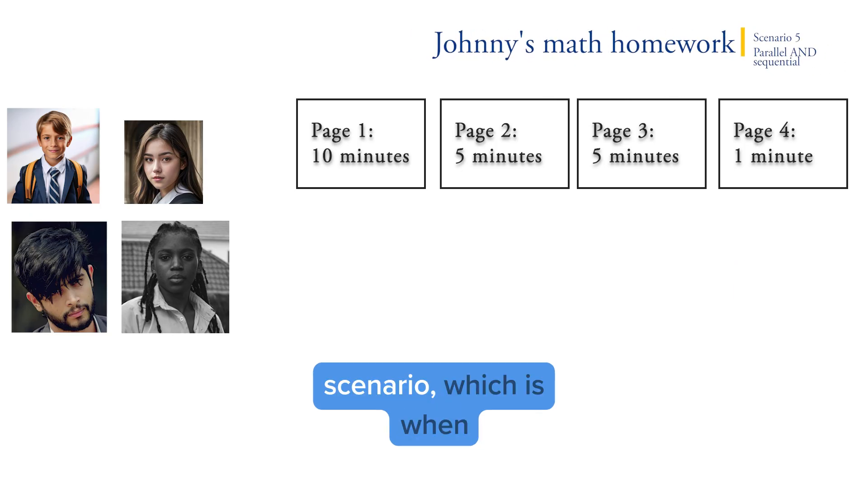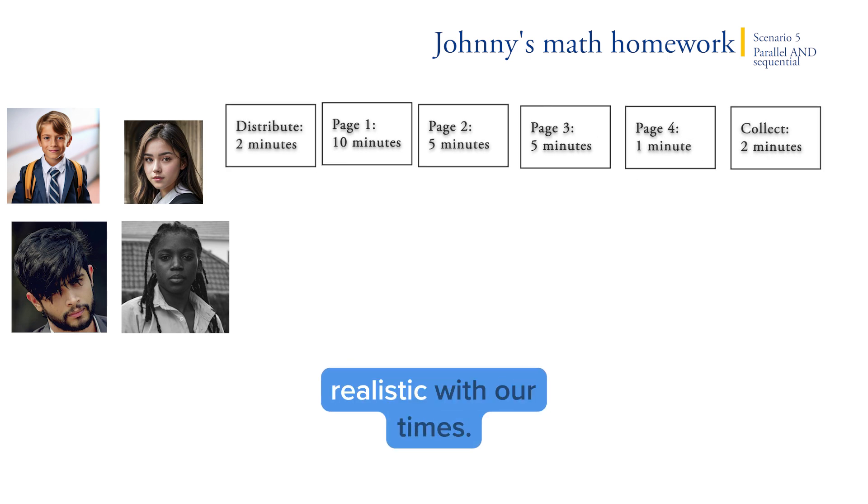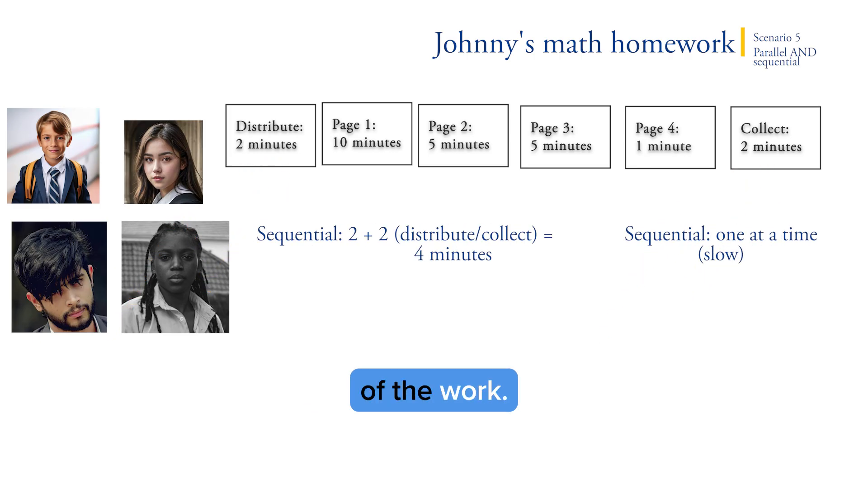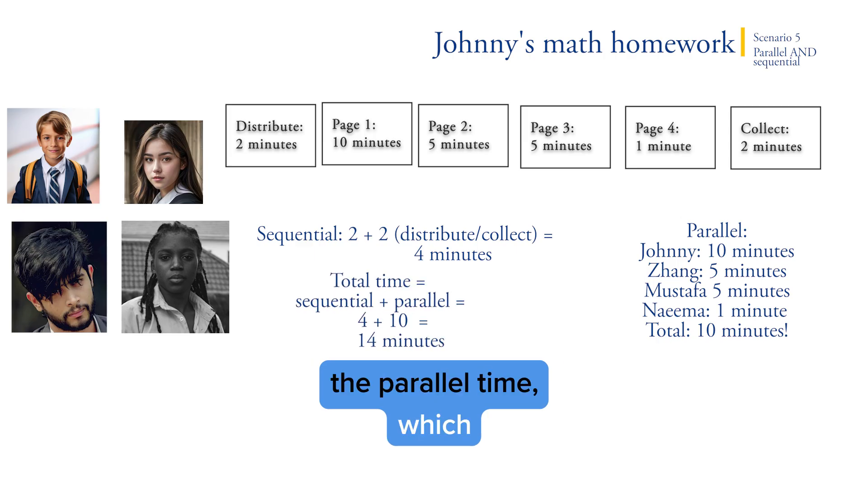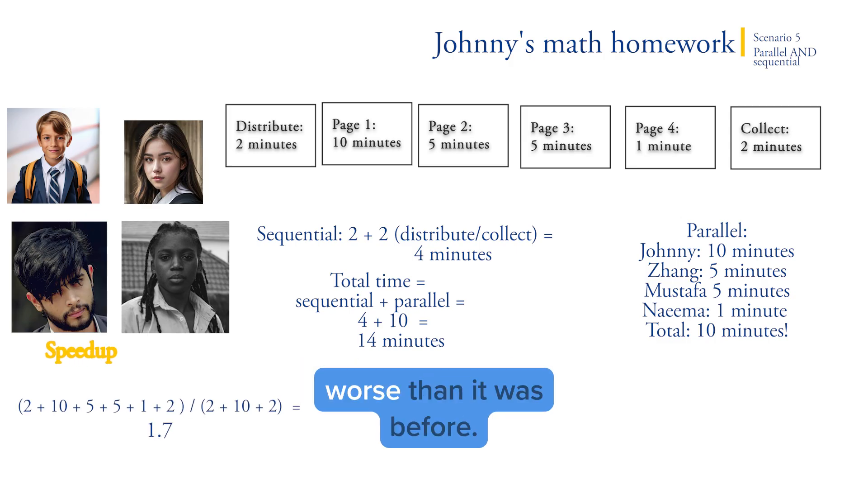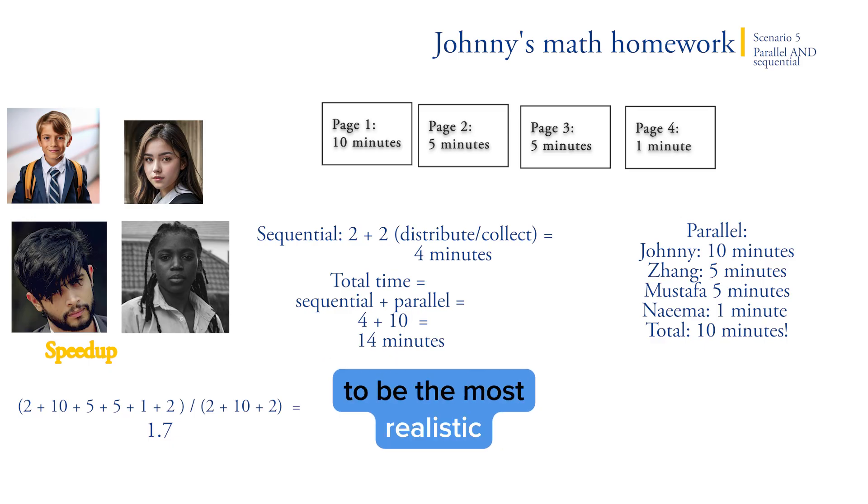Scenario five. This is our most realistic scenario, which is when we have both sequential and parallel components to our workflow. In this go around, we're a little bit more realistic with our times. We add in the time it takes to distribute the homework and to collect it. This is going to be our sequential portion of the work—sequential because we can't speed it up by splitting up the work. We still have a parallel portion of the work, which is still something that takes 10 minutes long, the same as the last scenario. So our total time is the sequential time plus the parallel time, which is 2 minutes plus 2 minutes (that's sequential) and then 10 minutes of parallel time, giving us 14 minutes total. We can once again calculate the speed up, which is going to be slightly worse than it was before. Why? Because we have more sequential parts. So this kind of question right here is going to be the most realistic and most likely question you'll see on the AP exam, and you'll want to be able to solve it.